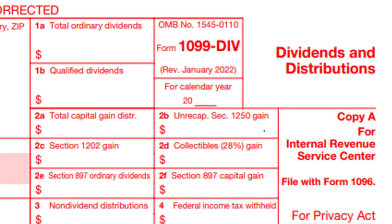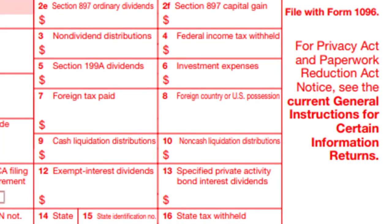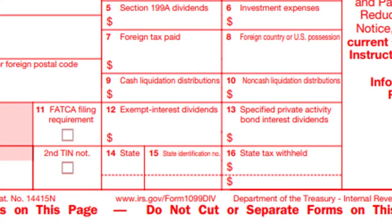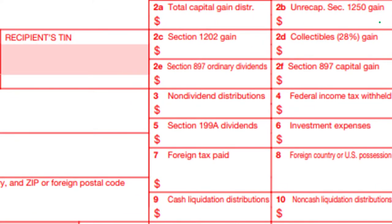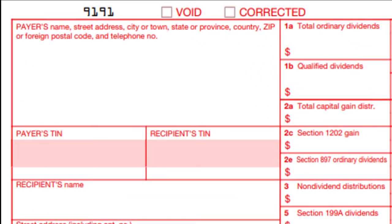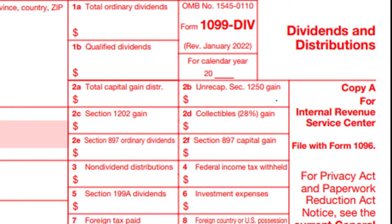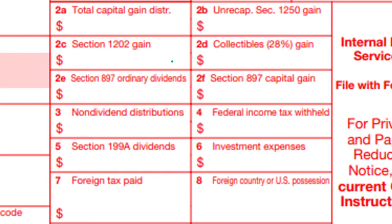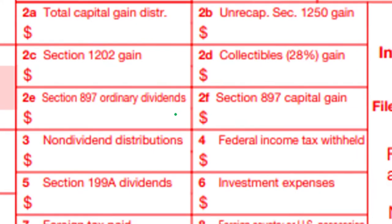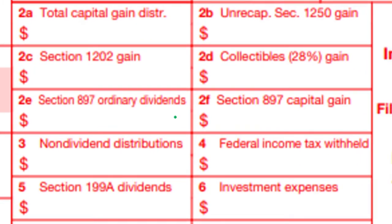Then you've got some special conditions: unrecaptured Section 1250 gain. If this comes up, you'll want to look at the instructions, and your tax software will help with these more unusual items. Section 1202 is a similar situation; collectibles 28% gain applies in the case of collectibles, and that doesn't happen quite as often as Section 1250 in my experience - though it depends on who your clients are.